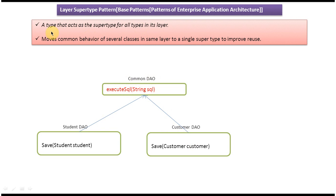Now if you read the first sentence — 'a type that acts as a super type for all types in its layer' — this layer has two DAOs: StudentDAO and CustomerDAO. CommonDAO is the type that acts as a super type of all types in its layer. And the second point — 'moves common behavior of several classes in the same layer to a single super type to improve reuse' — we moved the common method executeXQL to the super type. This is about the Layer Supertype design pattern. Thanks for watching, bye.